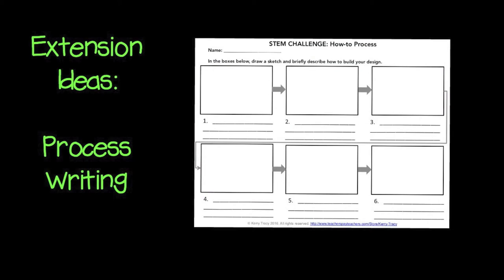Another idea is for students to create process flows for building their designs. They can turn these into paragraphs or even exchange with other teams to try and build each other's designs based on the process flow. This is kind of like that activity where you make a peanut butter and jelly sandwich based on the directions you're given, and that can be really fun and also a great way to work on precise writing.